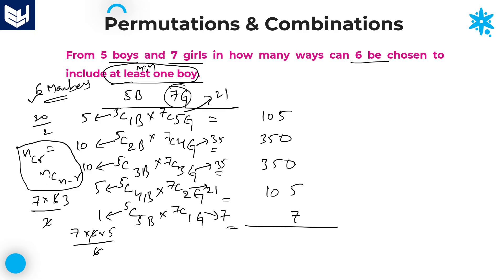Adding all values: 105 + 350 + 350 + 105 + 7 = 917. So 917 is the required answer for this question. I hope you enjoyed the session. Thank you very much for watching.